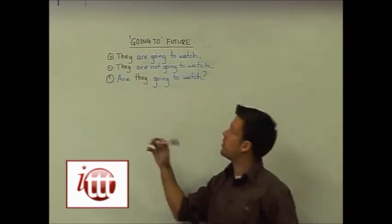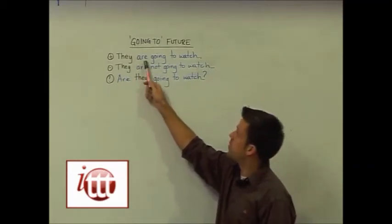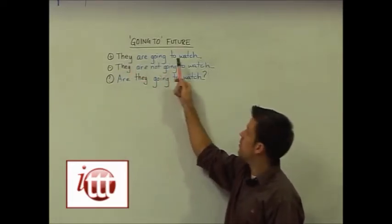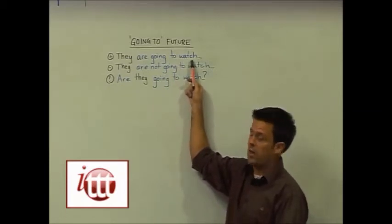Here the important words are the helping verb to be, conjugated appropriately based upon our subject, we've got the word going, the word to, and the base form of any verb that follows.